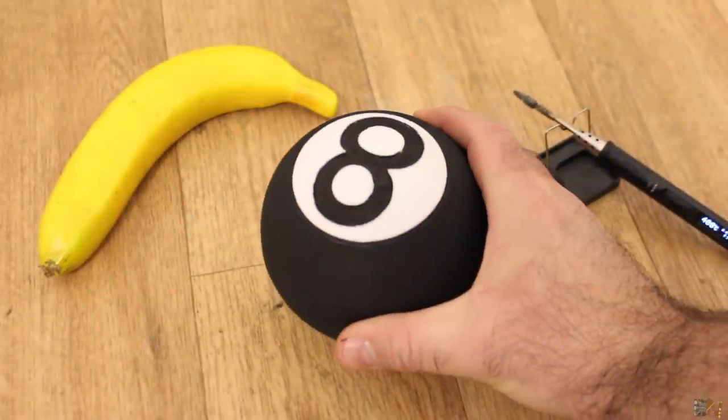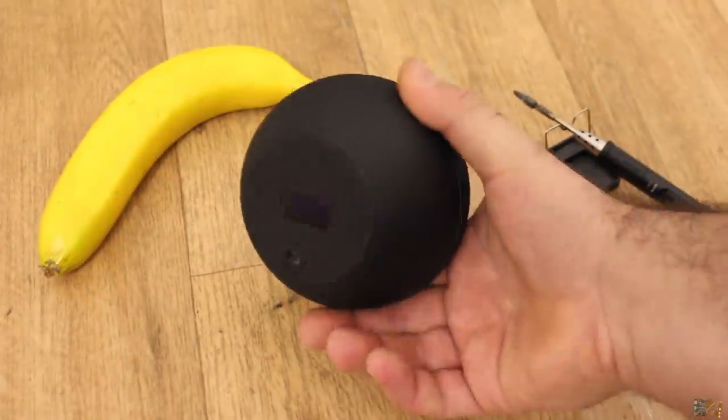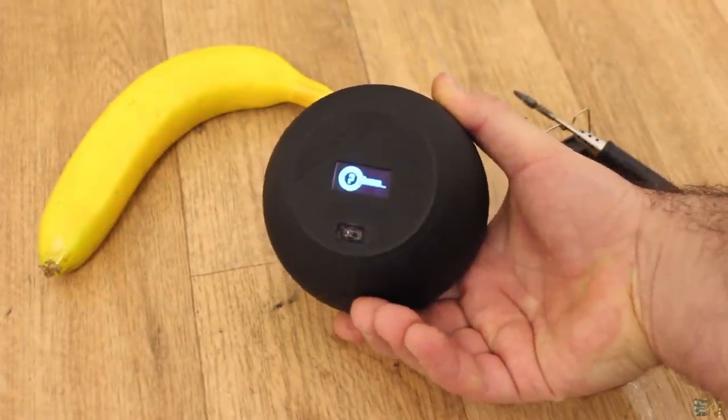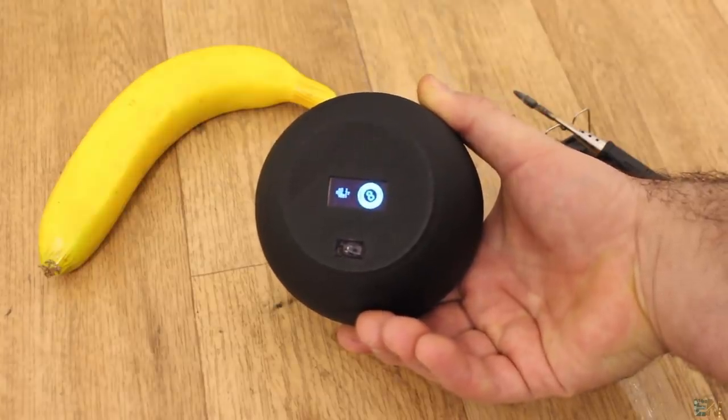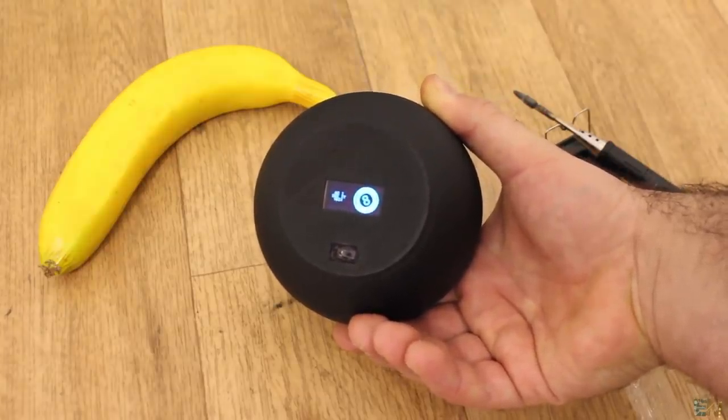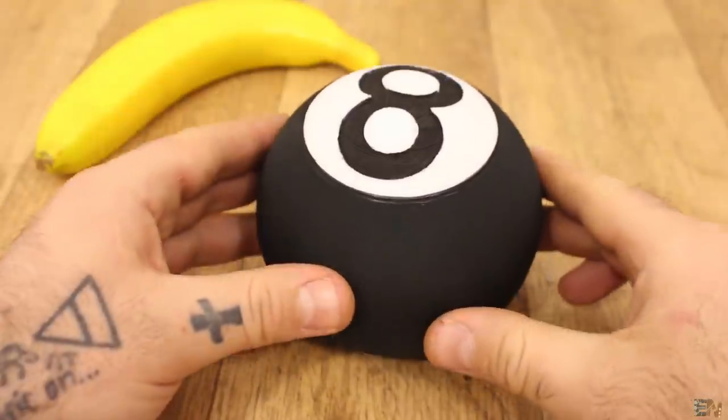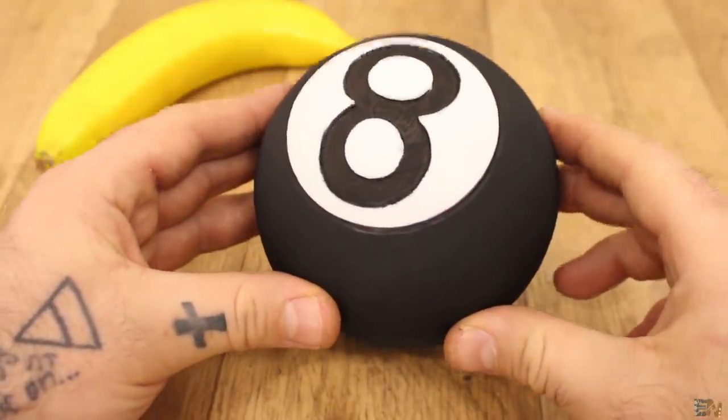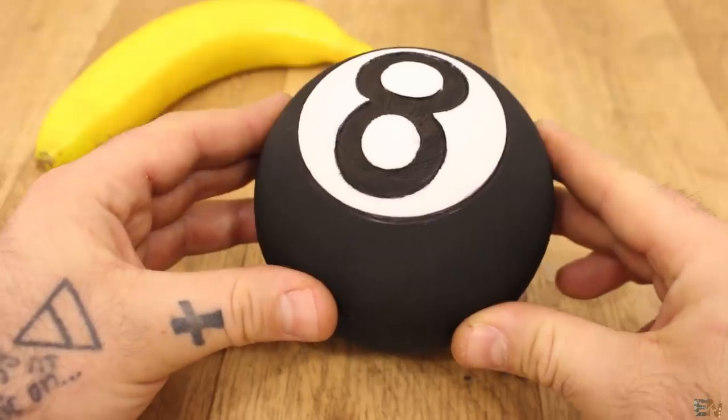What's up my friends, welcome back. A Magic 8 Ball will tell your destiny. Just ask it a simple question and rotate the ball. You will get your magic answer. So let's see how this works. Magic ball, will this simple video get to 100,000 views?